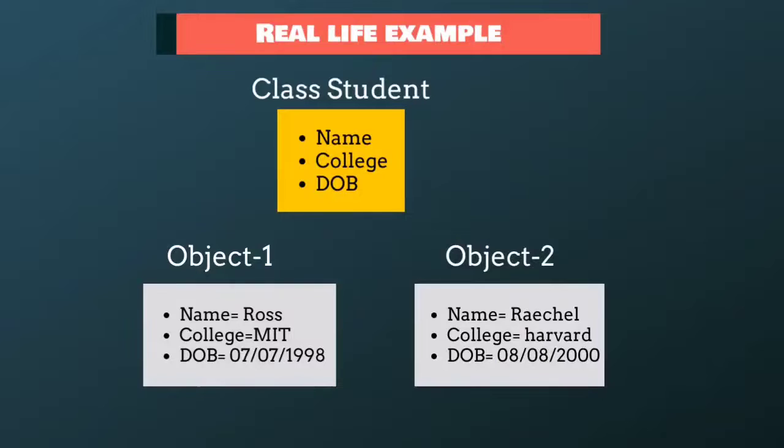For example, in the first object, value of the name variable is Ross. And for the second object, value of the name variable is Rachel. Now you can see, for every object, Java has created a separate copy of the variable.